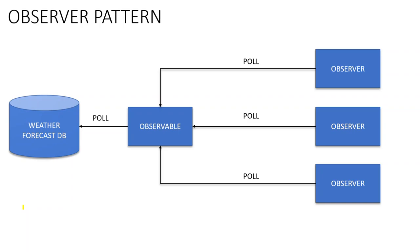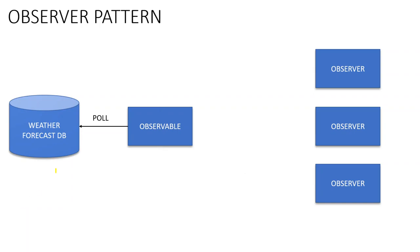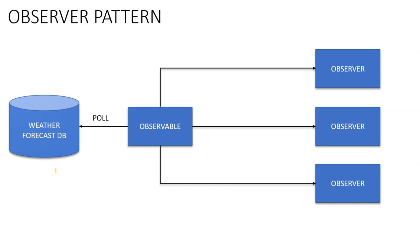The problem here is that three observers are unnecessarily polling the observable. If there is data it's fine, but if there is no data it causes unnecessary polling, and the observable is also polling the weather forecast DB. Instead, the observable can push the message to the observers, so only one component does the polling and the others just wait for the observable to push messages to them. This can be done with a single thread — for example, observable polls using thread T1, and T1 sends the message to all observers.